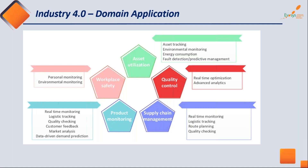Beyond these, there are other areas like connected workers which can be utilized in this concept. Each and every area can be touched — be it asset utilization, quality control, asset tracking, environmental tracking, energy consumption, fault detection, and predictive maintenance. Predictive maintenance is a very useful use case for organizations with valuable assets.